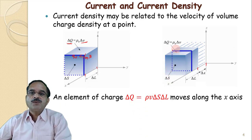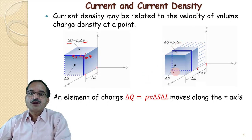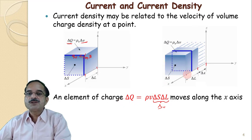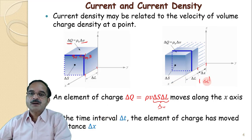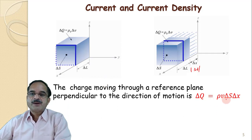The charge delta Q within this small differential volume is rho V times delta V, where delta V is the surface multiplied by length. This charge is moving in the x direction. In the time interval delta T, it moves a distance of delta x in the x direction, so the time required to move delta x is delta T.